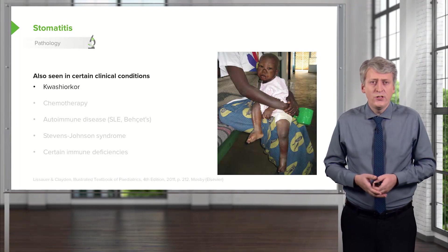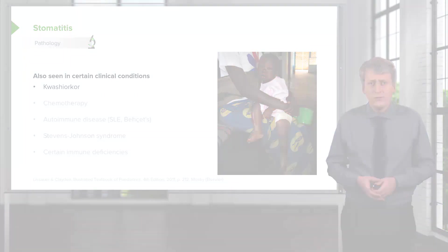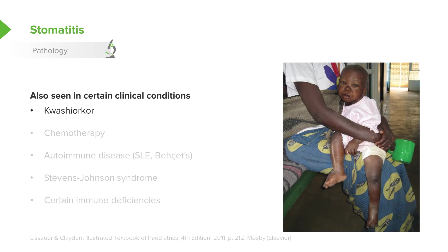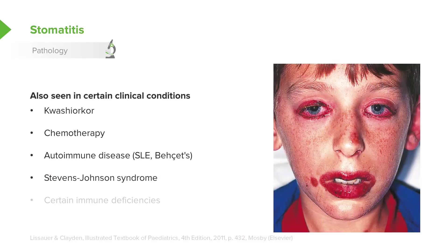We also see stomatitis in particular clinical situations. In the United States it's less common, but it is known to happen in patients with kwashiorkor. It may happen with chemotherapy. It can happen in older children with autoimmune disease such as lupus or Behçet's disease, which is very common. Patients may have Stevens-Johnson syndrome, which can involve two areas of mucous membrane — such as this patient who has eye and mouth involvement.